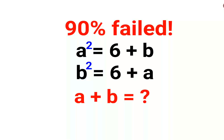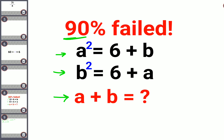Welcome everyone. This is a very tricky problem — literally 90% of people could not figure it out. We are given that a² equals 6 plus b, and b² equals 6 plus a, and they want us to find the value of a plus b.